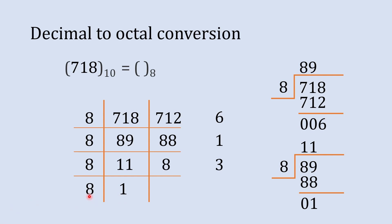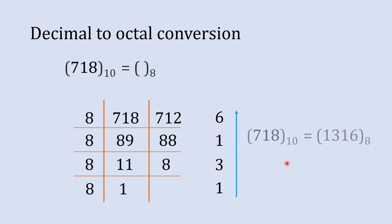At that point, write the last quotient, which is 1, as it is. Now you are supposed to rewrite this number from bottom to top, giving you 1, 3, 1, 6. So 1316 in octal is the equivalent of 718 in decimal. That's how you convert decimal to octal.